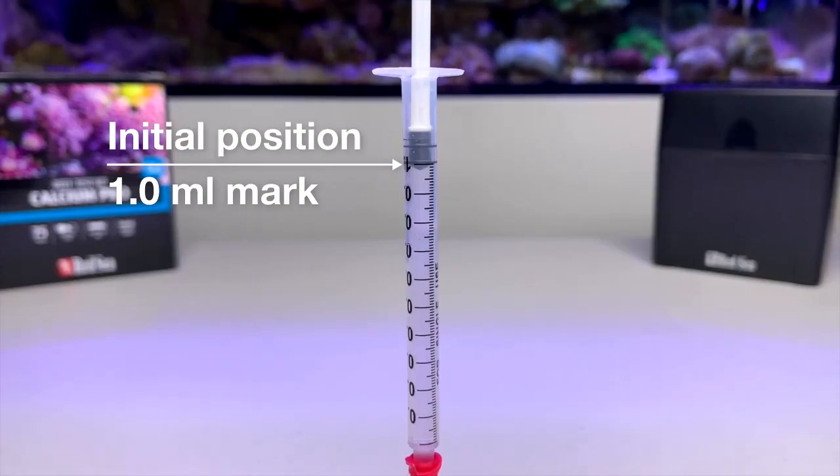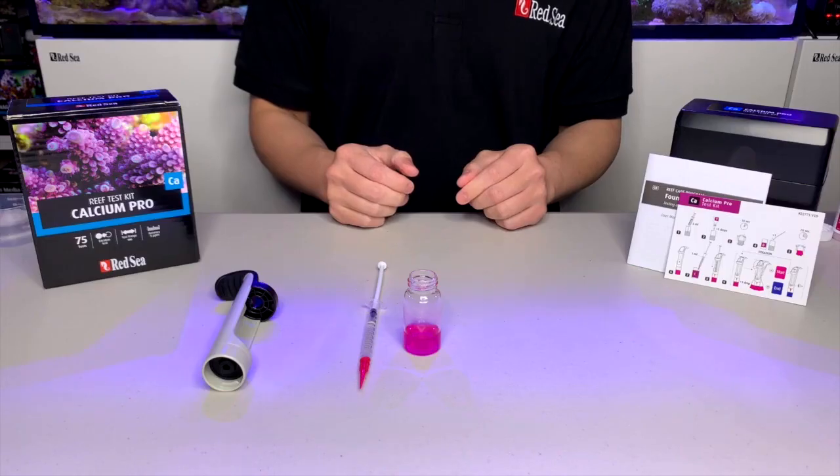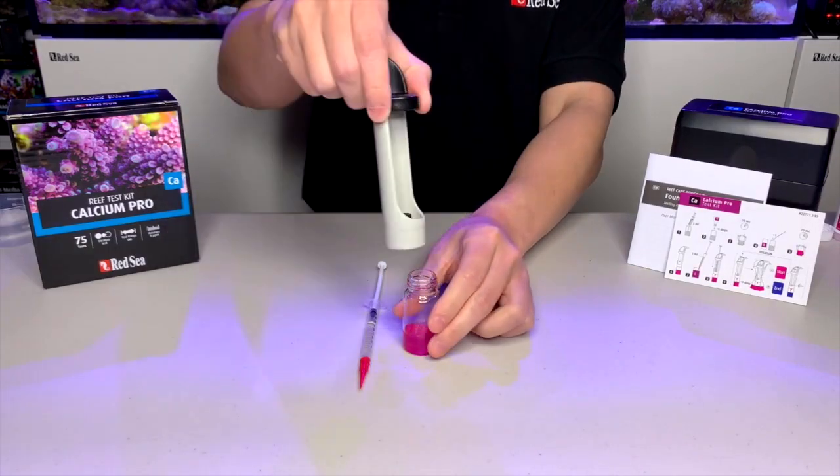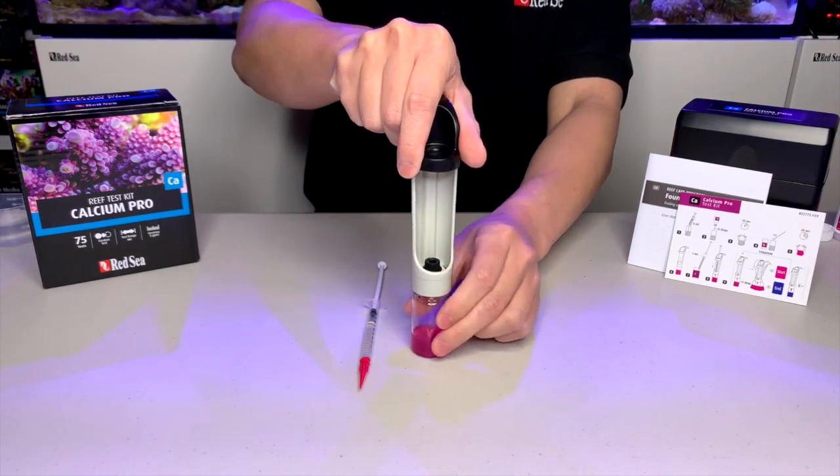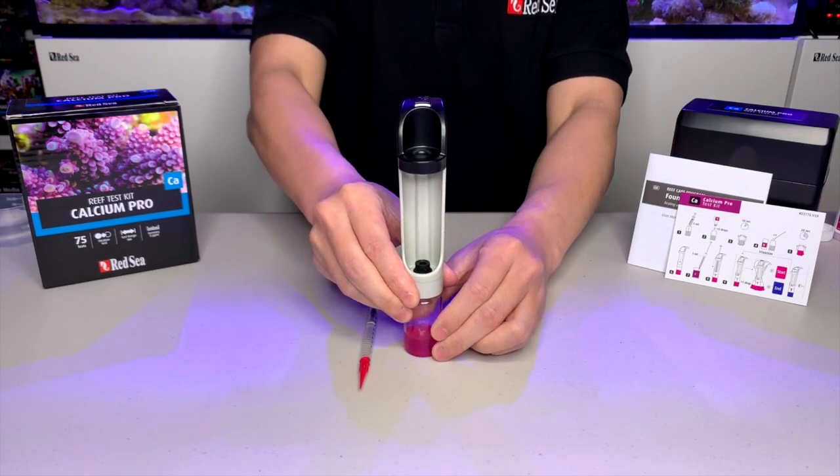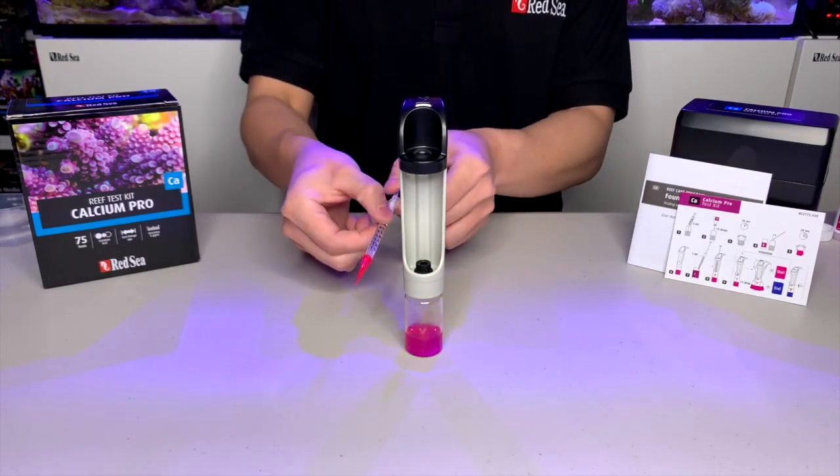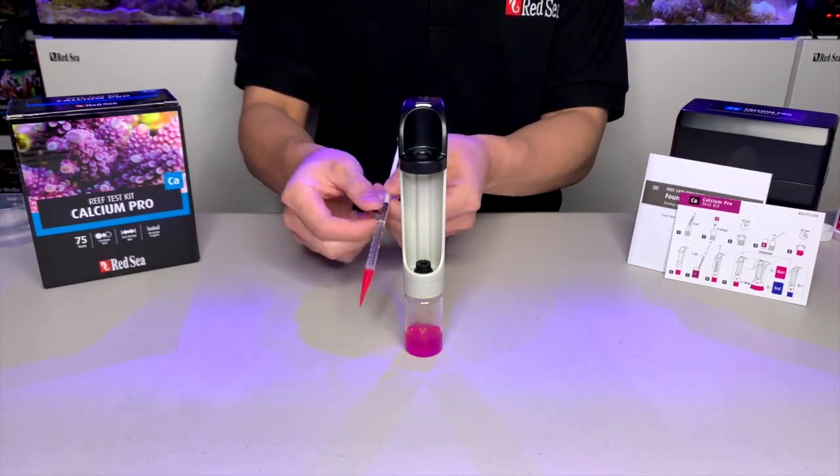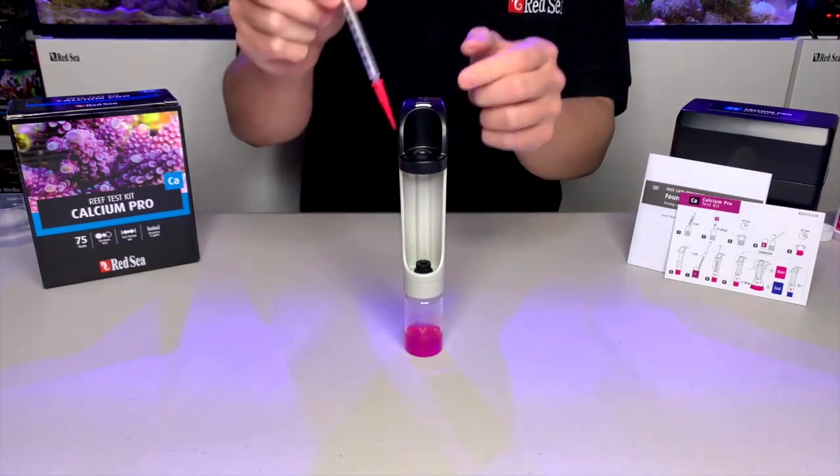Here is a close up so you can see where the plunger should be sitting at. Now we are going to assemble the titrator. Screw in the vial onto the bottom. And we insert the syringe into the titrator. Make sure the scale is clearly visible.